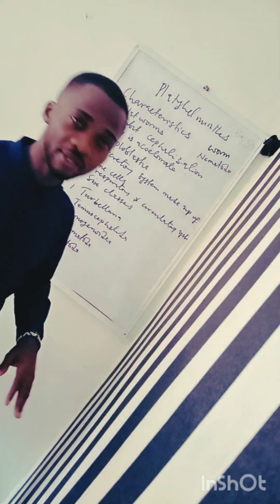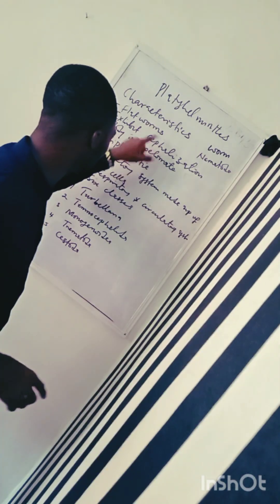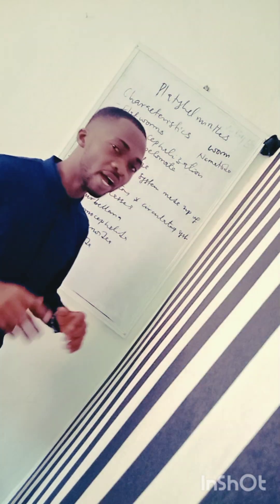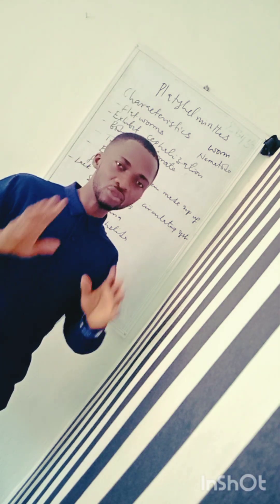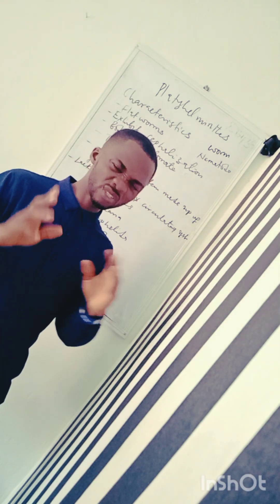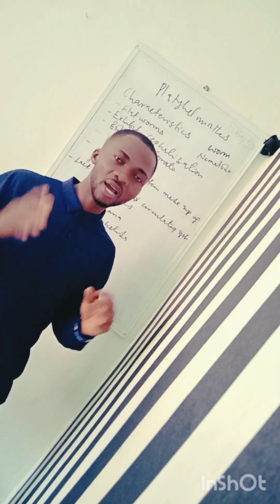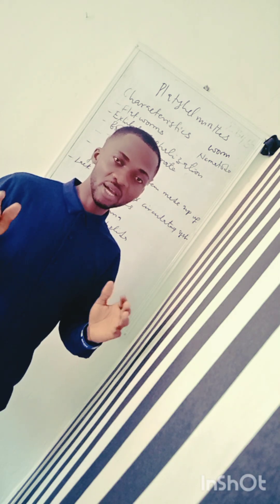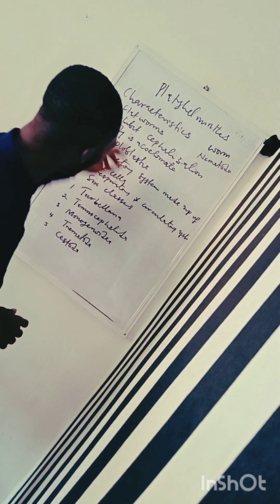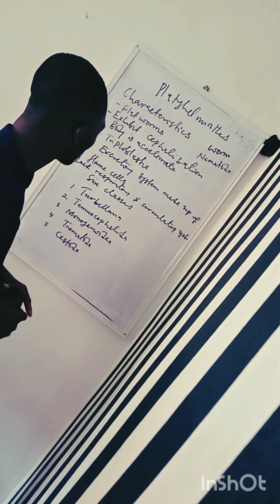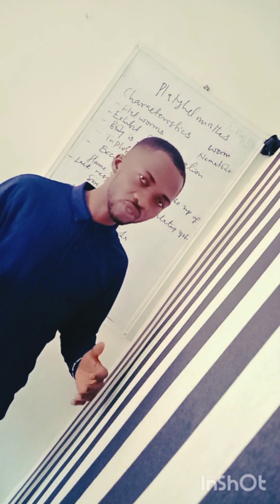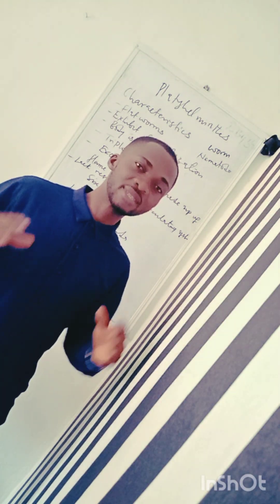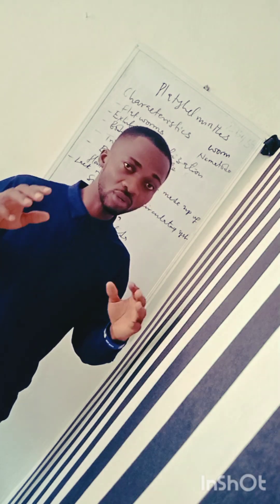Let's look at some of the characteristics of this group of worms known as Platyhelminthes. First, they are flat worms — ventrally flattened. Second, they are bilaterally symmetrical, meaning their body can be divided into two equal parts. We have bilateral symmetry and radial symmetry. Another characteristic is cephalization: the concentration of the sense organs in a definite part of the body known as the head.